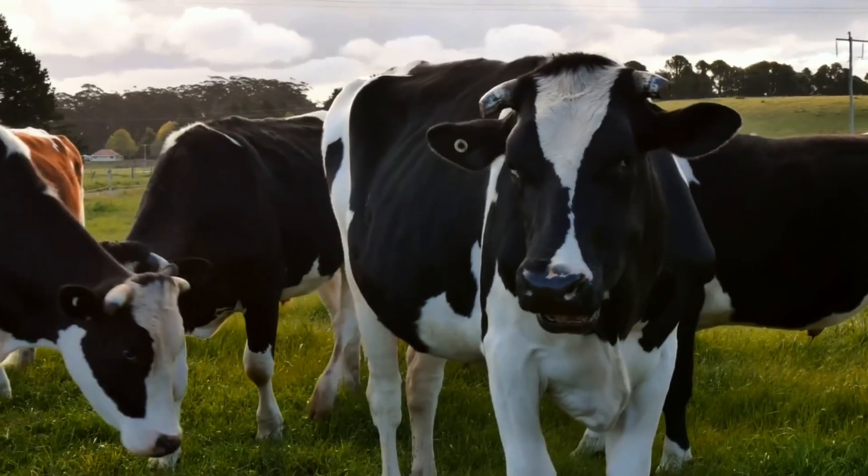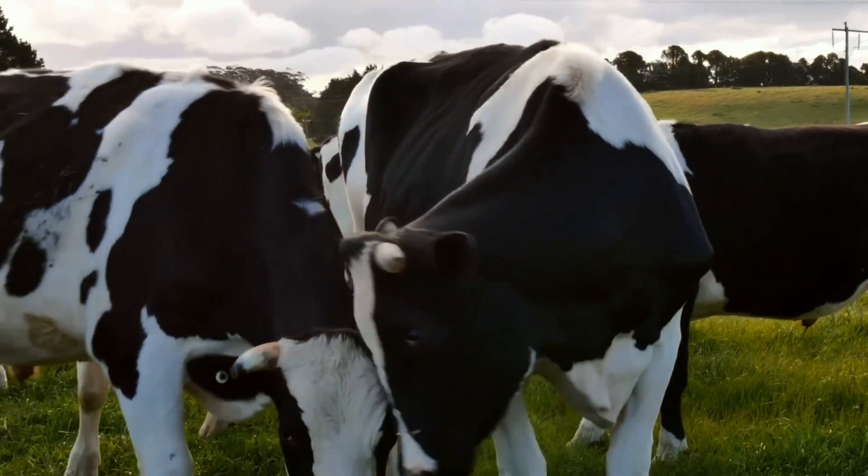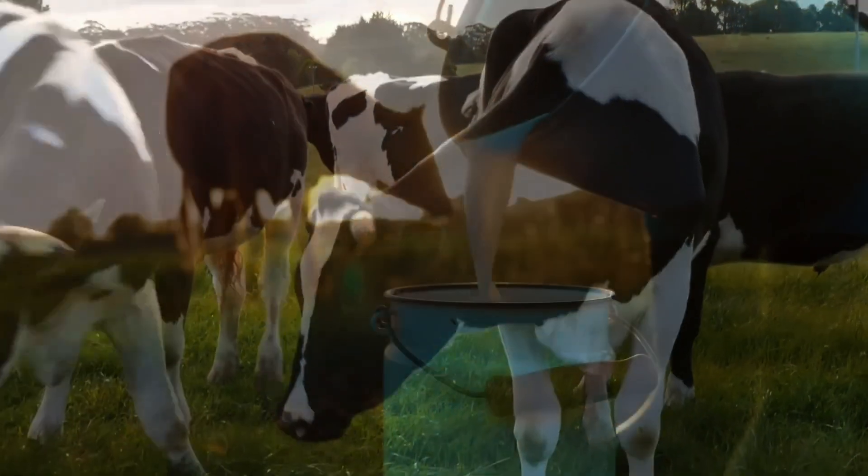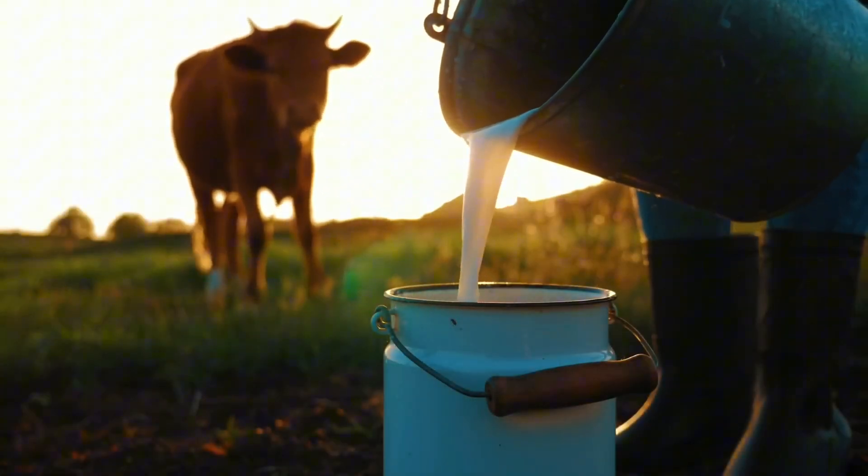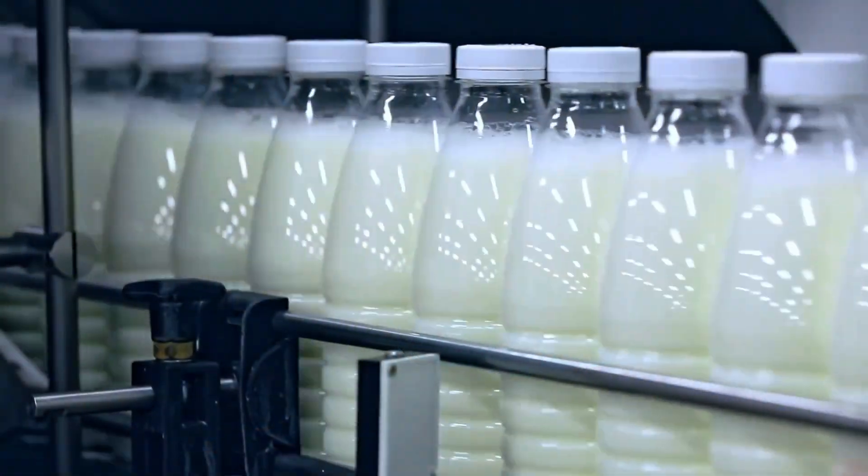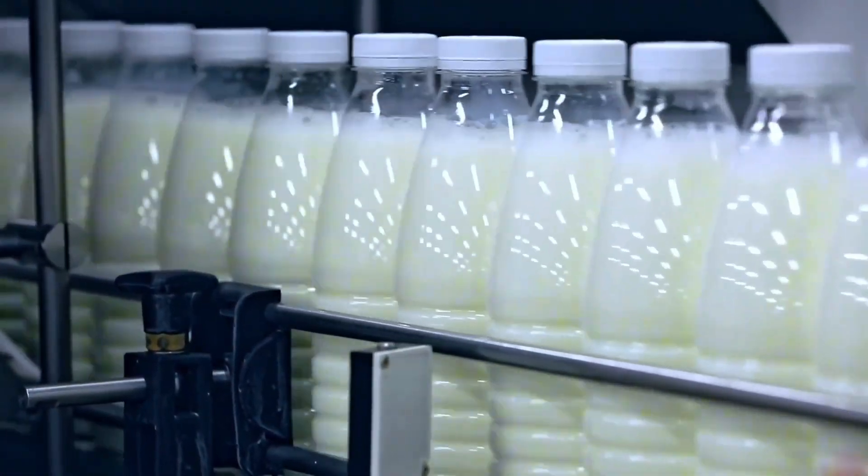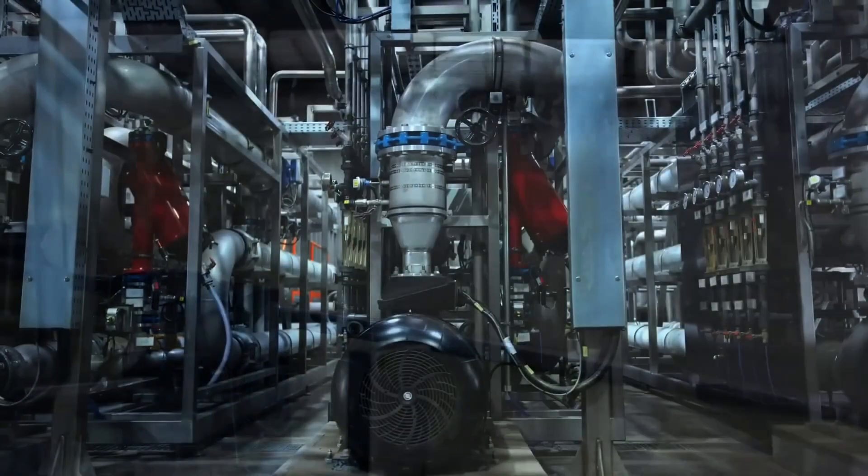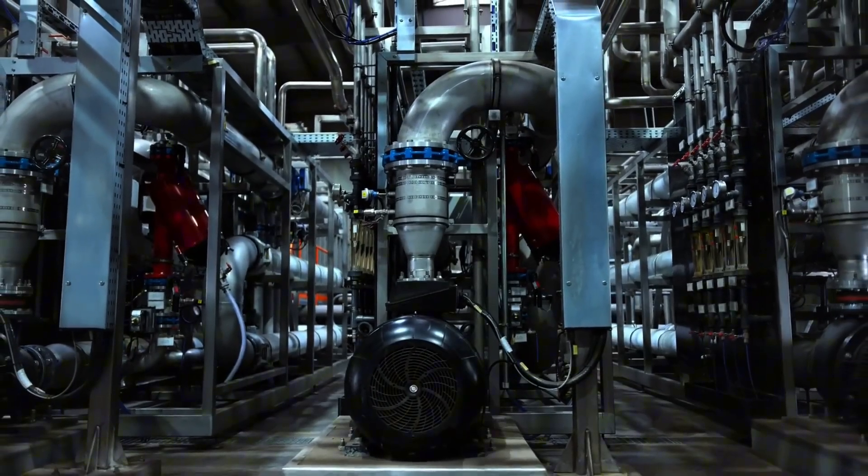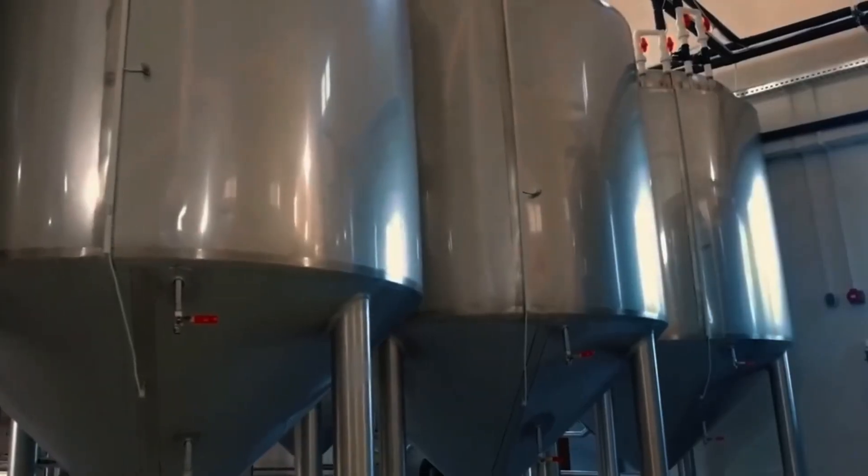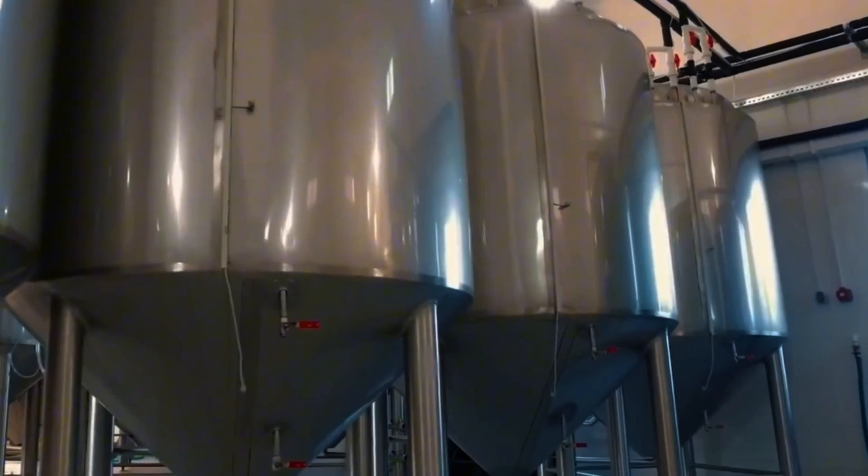Production begins long before the first camera flash or the churn of a freezer. It all starts at the farm. Carefully selected milk is delivered to the factory in refrigerated tank trucks, equipped with cleanliness and temperature sensors. Before a single drop enters the process, the milk undergoes rigorous lab tests.